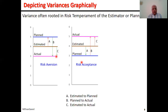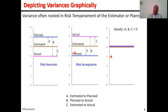Ideally speaking, all three variances — A between estimated and planned, B between planned and actual, and C between estimated and actual — shouldn't exist. In other words, ideally, all three lines on the graph should be very close to each other.